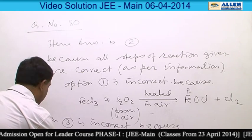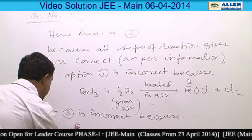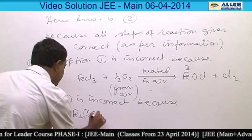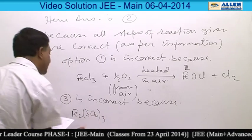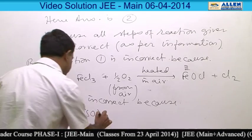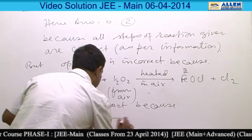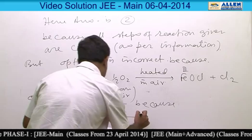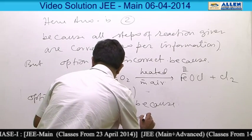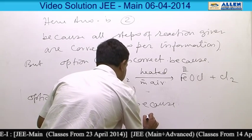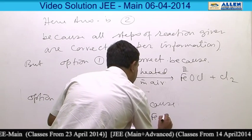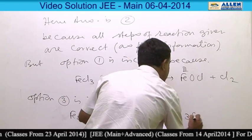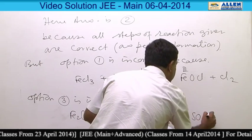The heating product of Fe2(SO4)3 given in the option is incorrect. The correct product of heating Fe2(SO4)3 is Fe2O3 plus 3SO3.